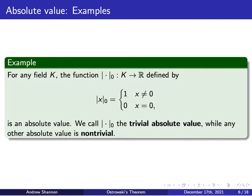Finally, for any field k, the function double bar sub 0 from k into the reals, defined by 0 if x is 0 and 1 for any non-zero element of the field, is also an absolute value — albeit a relatively simple one — and we call it the trivial absolute value. Any other absolute value that doesn't observe this exact rule will be called non-trivial.